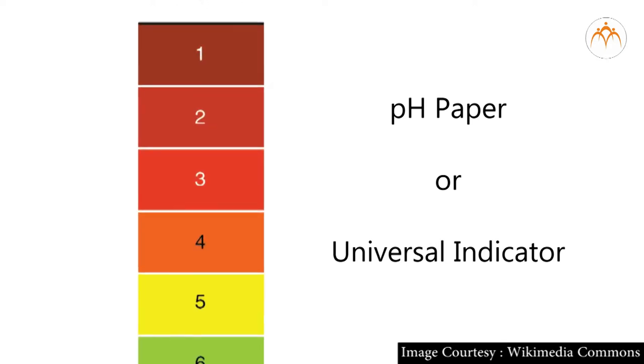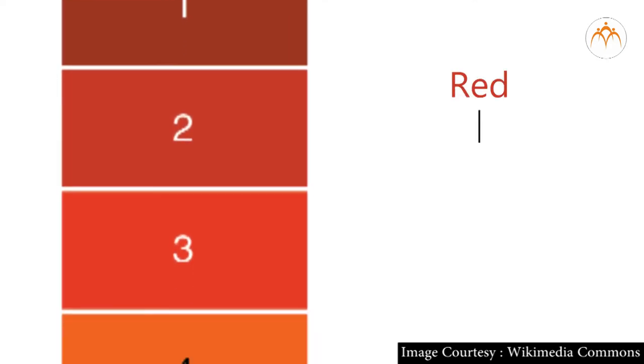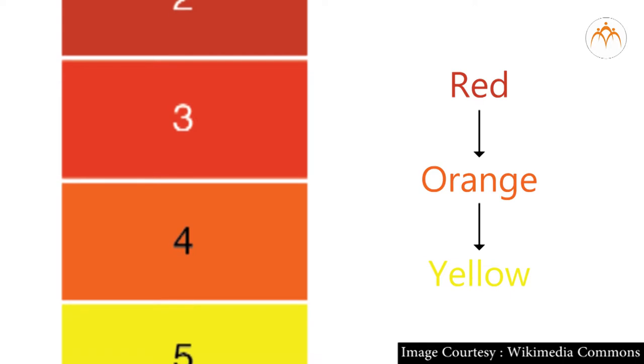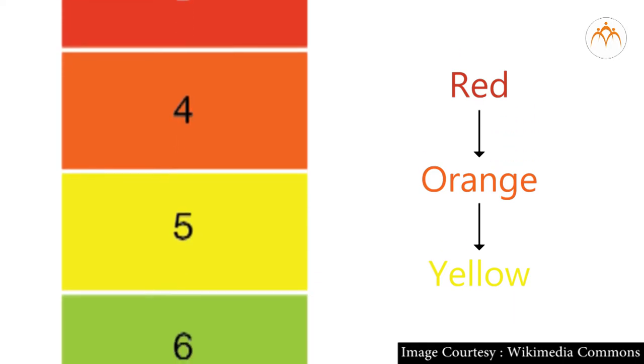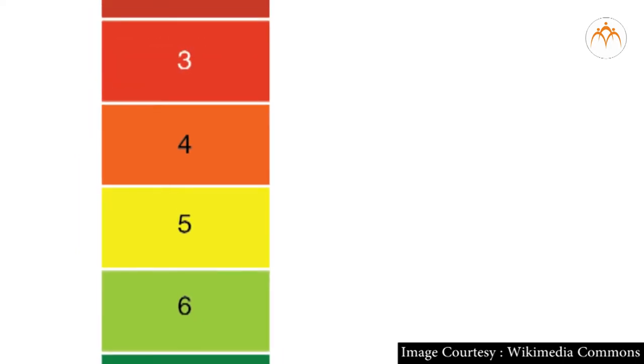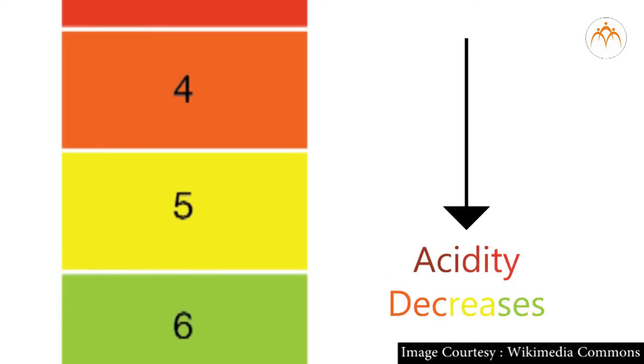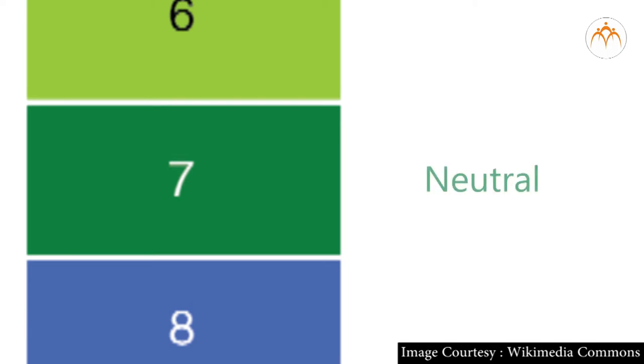pH paper or universal indicator show red to orange to yellow color change to indicate acidic nature of solution with values ranging between 1 to 7. Acidity decreases from 1 to 7. Value 7 indicates that a solution is neutral and shows green color.